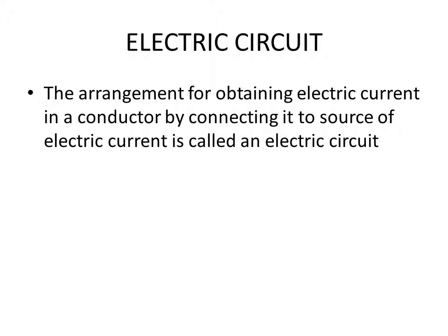An electric circuit is the arrangement for obtaining electric current in a conductor by connecting it to a source of electric current. It is a closed path in which electric current flows — a continuous conducting path for electric current. For example, when an electric torch is switched on, the bulb glows because electric current flows from the battery to the bulb.